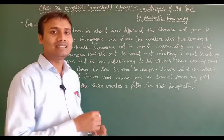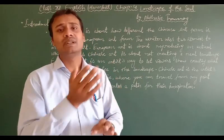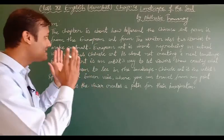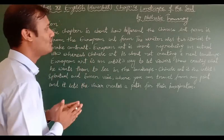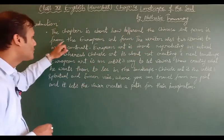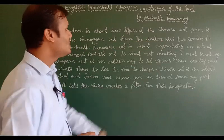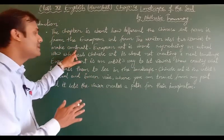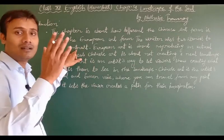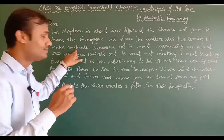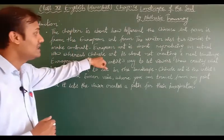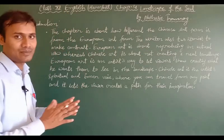So, let us come to know and try to understand the introduction part of this chapter. There is a difference which has been described between the Chinese art and European art. The chapter is about how different the Chinese art form is from the European art. The writer uses two stories to make contrast — a difference between two objects, two people, or two concepts. European art is about reproducing an actual view, whereas Chinese art is about not creating a real landscape.